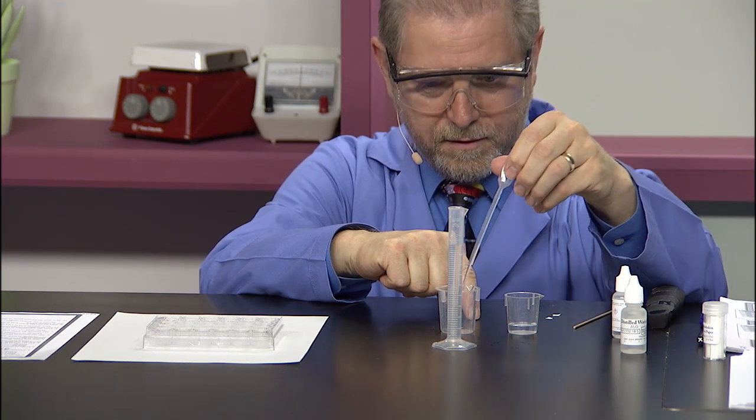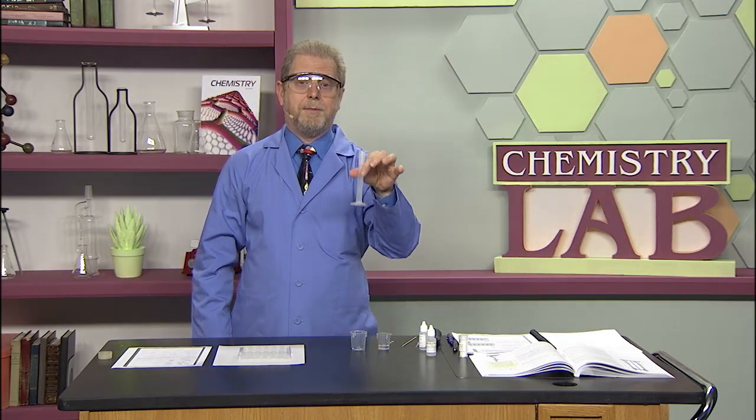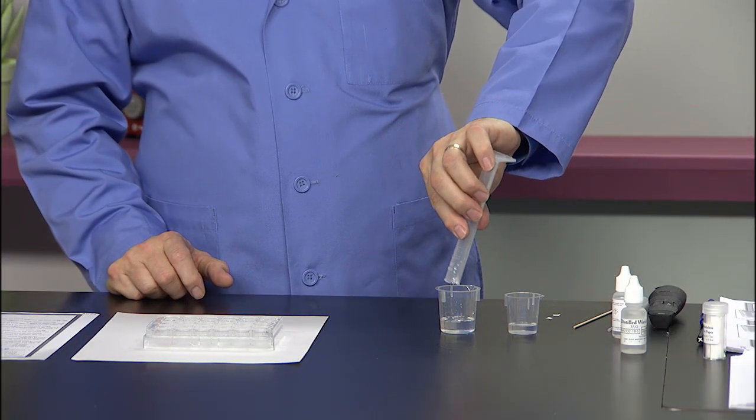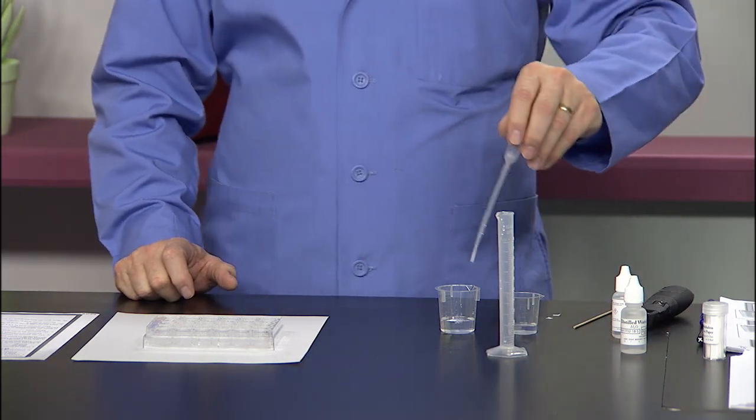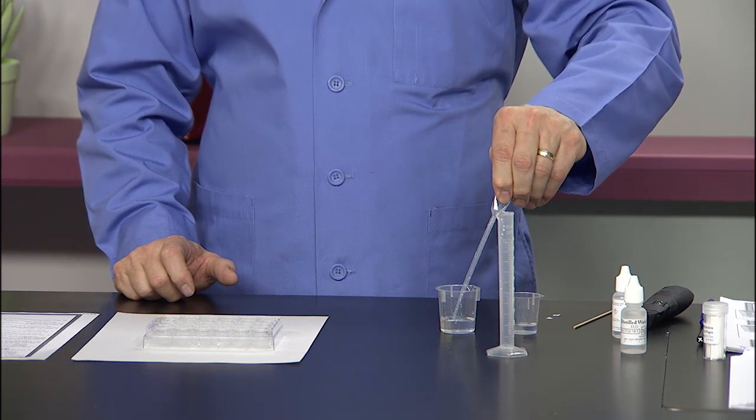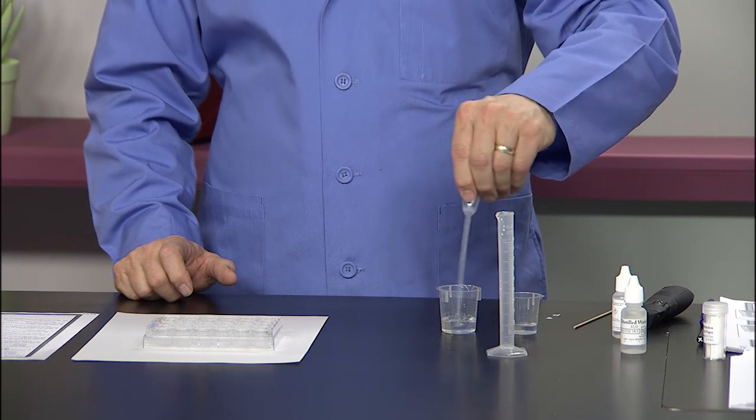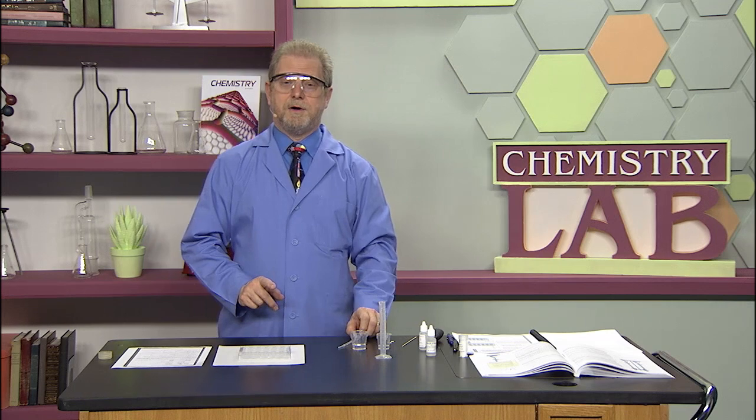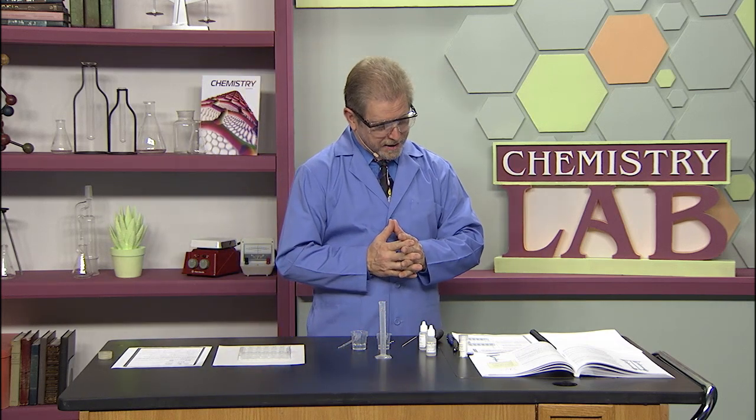I've measured nine milliliters of water and I'm going to add that. I'm going to take the disposable pipette, the calibrated pipette, and mix that around. We've diluted that by one to ten.